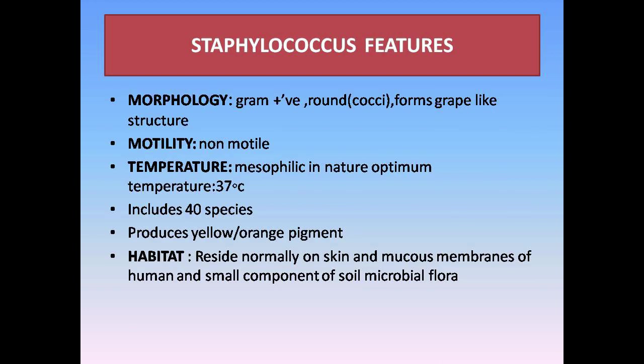Now let's take a look at the features of Staphylococcus. Staphylococcus are gram-positive round cocci that form gray-black structures. It is non-motile and mesophilic in nature, having an optimum temperature above 37 degrees Celsius. It has 40 species. It produces yellow or orange pigment, and its habitat includes skin and mucous membranes of humans and small components of soil microbial flora.